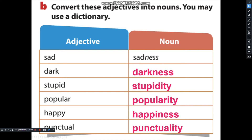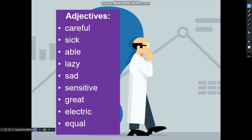Let's repeat after me: darkness, stupidity, popularity, happiness, punctuality. Now in the next exercise, you are going to give me the noun for these adjectives: careful, sick, able, lazy, sad, sensitive, great, electric, equal.